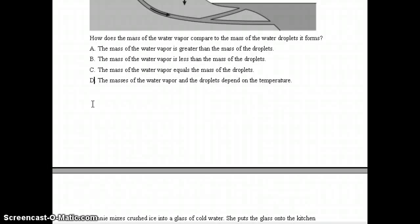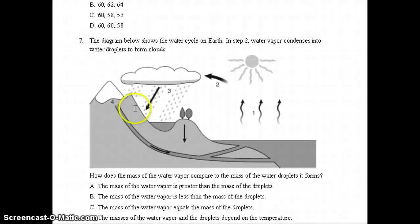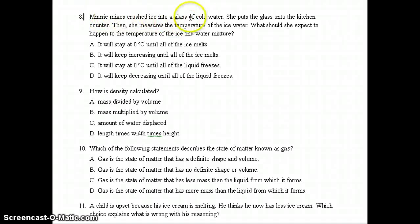Number 7, it says the diagram below shows the water cycle on Earth. In step 2, water vapor condenses into water droplets to form clouds. It says how does the mass of the water vapor compare to the mass of the water droplet it forms? Once again, you should know the mass stays the same, so the correct answer should have been letter C. The mass of the water vapor equals the mass of the droplets. Question number 8, it says Minnie mixes crushed ice into a glass of cold water. She puts the glass onto the kitchen counter. Then, she measures the temperature of the ice water. What should she expect to happen to the temperature of the ice and water mixture? The correct answer should be letter A. It will stay at 0 degrees Celsius until all of the ice melts.